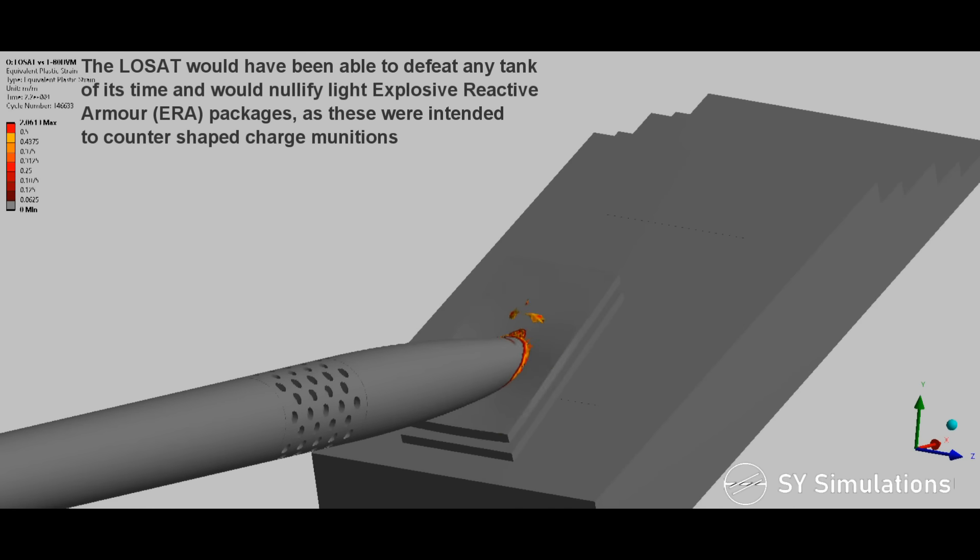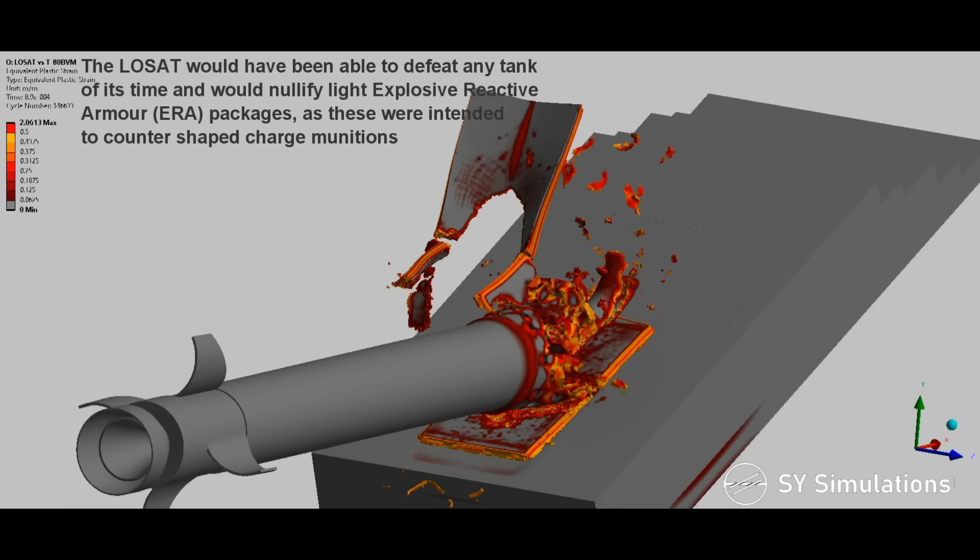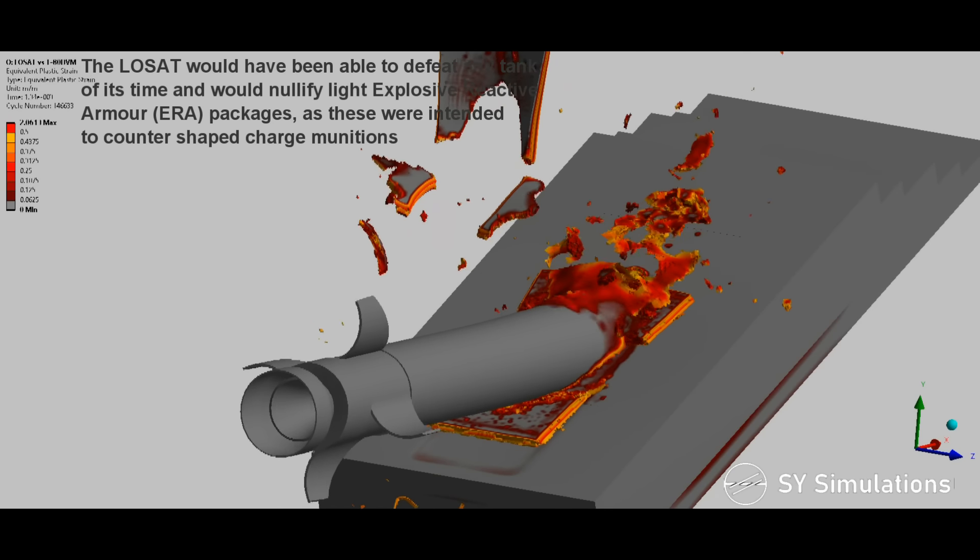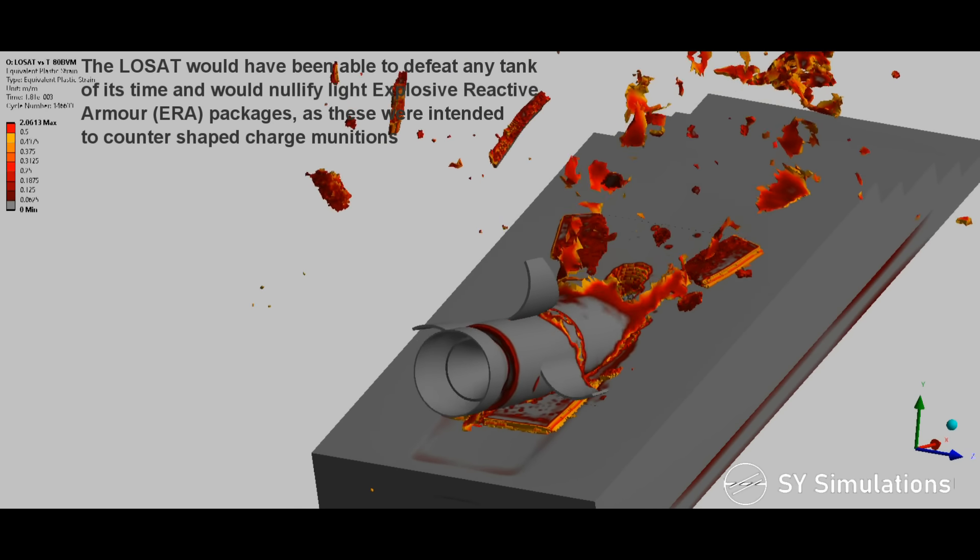The LOSAT would have been able to defeat any tank of its time and would nullify light explosive reactive armor packages, as these were intended to counter shaped charge munitions.